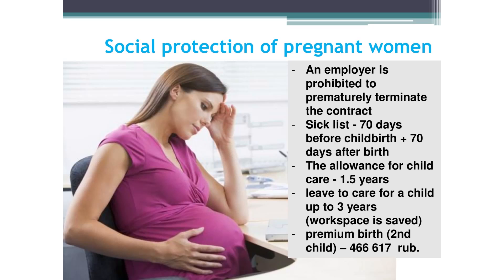To increase the birth rate, the government provides social protection for pregnant women. If a woman is pregnant, it is forbidden to prematurely terminate an employment contract with her. A pregnant woman receives sick leave 70 days before the expected birth and within 140 days receives her average salary while at home. This period may be extended for medical reasons. A woman can take leave to care for a child for one and a half years and receive a child care allowance from the state, or extend parental leave to up to three years — though without allowance in that case.